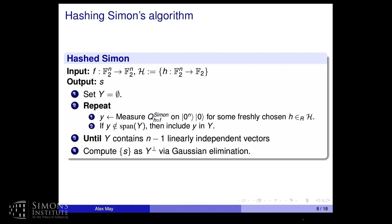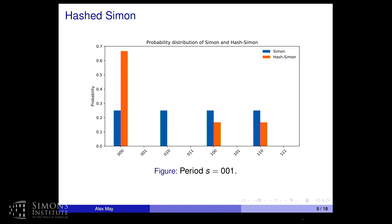The hashed Simon algorithm takes the original Simon algorithm but uses hashed versions of the functions, acting on n plus 1 qubits for a freshly chosen hash function. We collect vectors until we have n minus 1 linearly independent vectors and then compute the secret period S. Looking at the observed distribution with a special hash function, we see that the hashed version produces peaks only where the original had peaks — but some are missing, and the zero vector is measured more often.